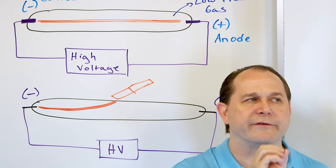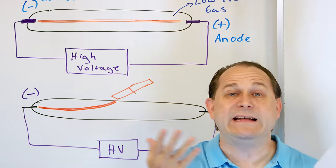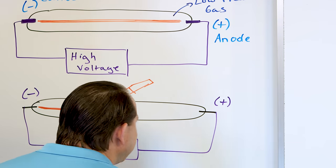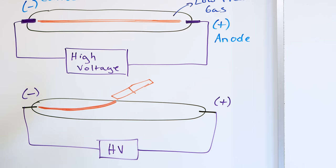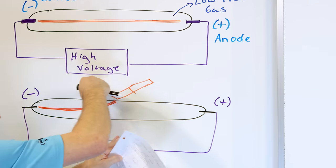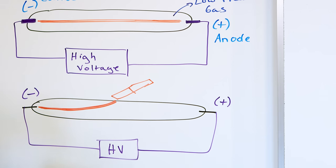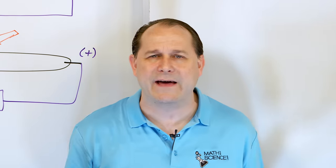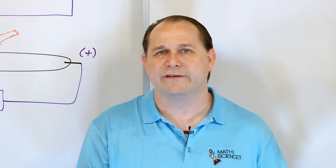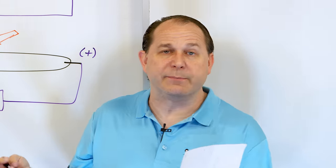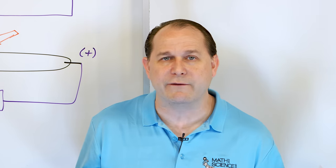They said: maybe we can do further experiments — we can generate this beam of cathode rays, influence them with magnets and charged plates, and learn more and more about what this beam really is. That was the goal: figure out what these things are, because maybe they're a fundamental building block of matter. And of course we now know that is indeed the case.